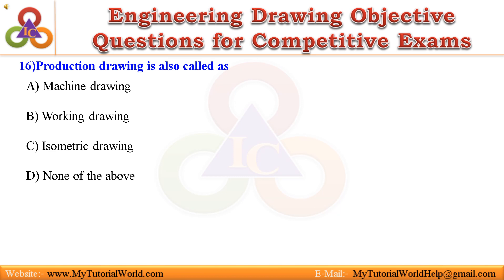16. Production drawing is also called as: A. Machine drawing. B. Working drawing. C. Isometric drawing. D. None of the above. Answer is: Working drawing.